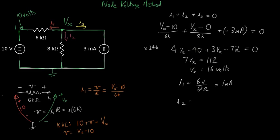And I2 is 16 volts over 8 kilo-ohms, giving us 2 milliamps. And you can see that KCL at node X is OK.